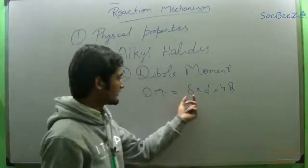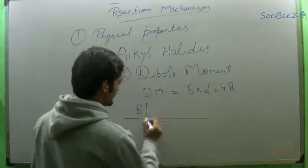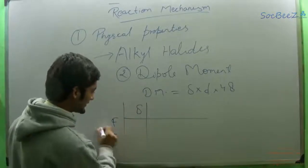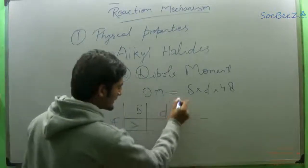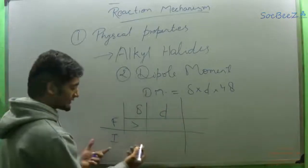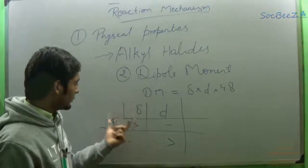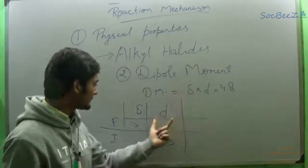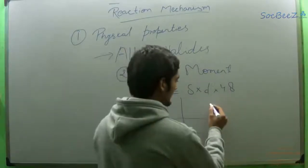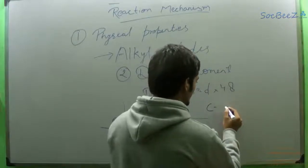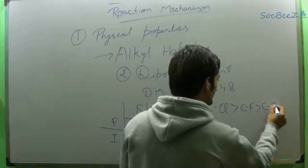So we just saw that there are two opposing factors. The charge is more in the case of fluorine than iodine, but if we come to the distance, the bond distance in iodine is much more than fluorine. So there is a controversy — the charge part is supporting fluorine, but the distance part is supporting iodine. Experimentally, it is found that the order for dipole moment is C-Cl, then C-F, then C-I, then C-Br.